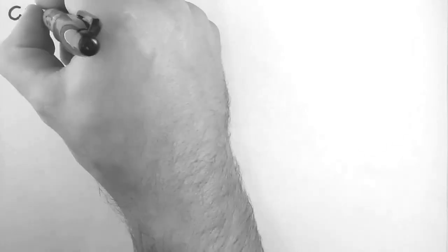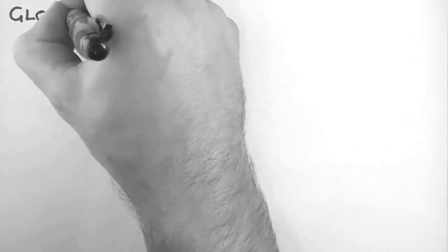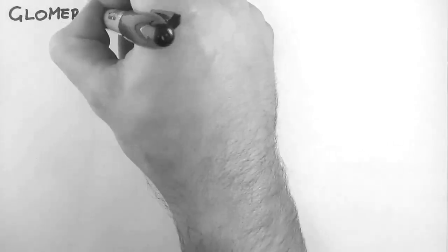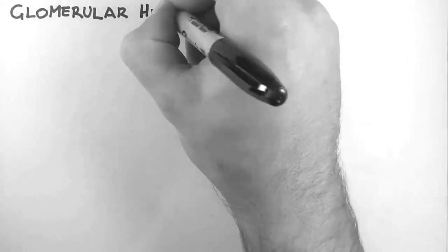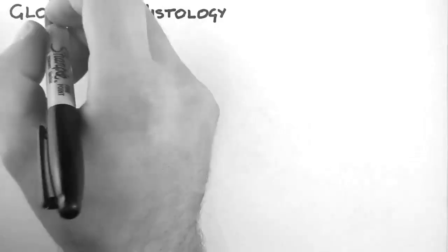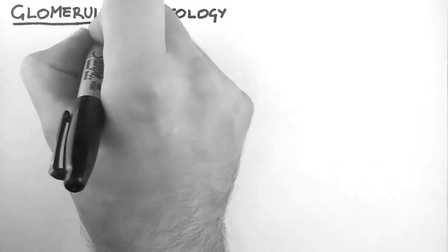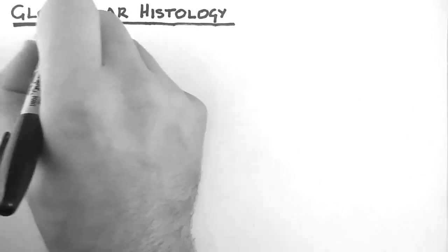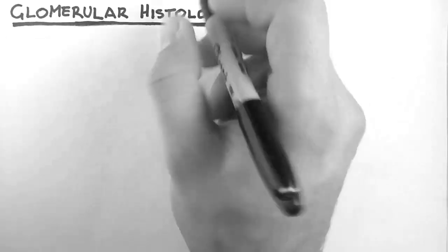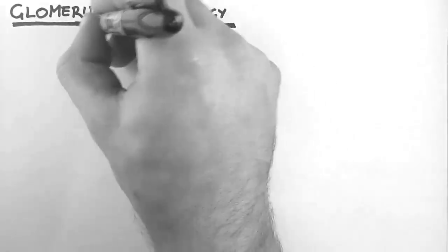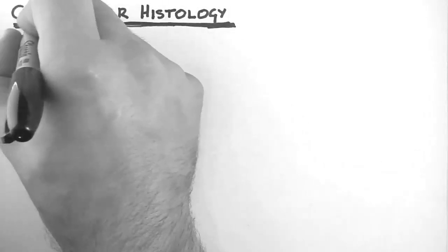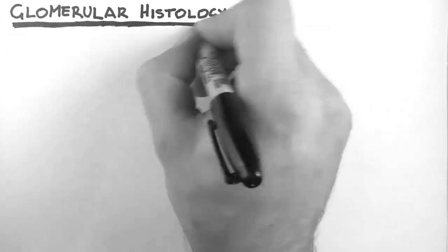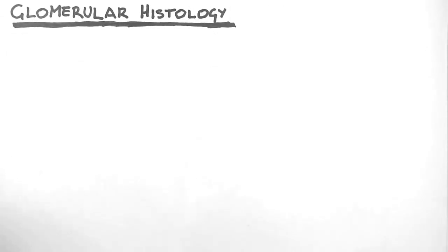In this video we're going to take a look at glomerular histology. Histology is the study of the microscopic anatomy of cells and tissues, so we are going to be looking at the glomerulus really close up.